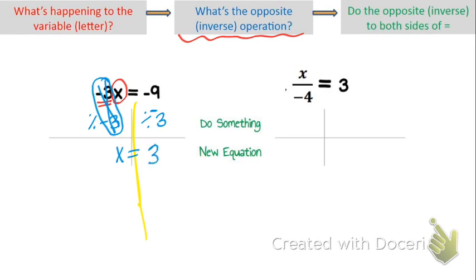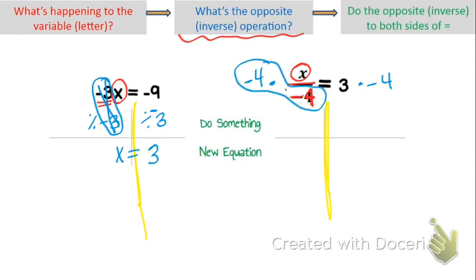On the right example, I look at both sides of the equal sign and ask what's keeping x from being by itself. It is being divided by negative 4 — I'm not subtracting 4, I'm dividing by a negative number. To undo dividing by negative 4, I multiply by negative 4 on both sides. You can write it to the side or underneath. Negative 4 divided by negative 4 is 1, so I'm left with 1x, and on the right side 3 times negative 4 is negative 12.